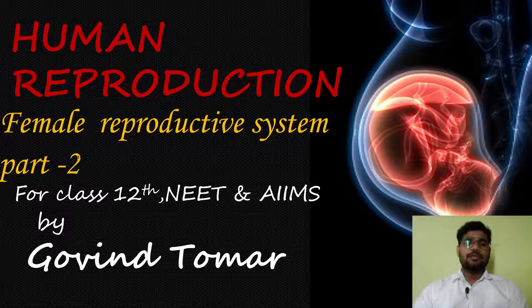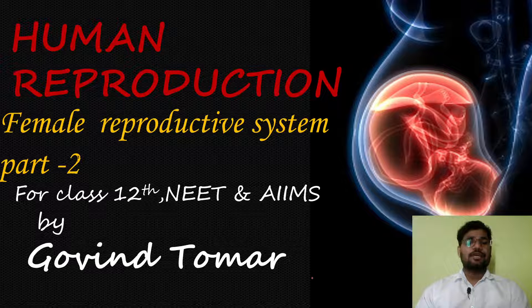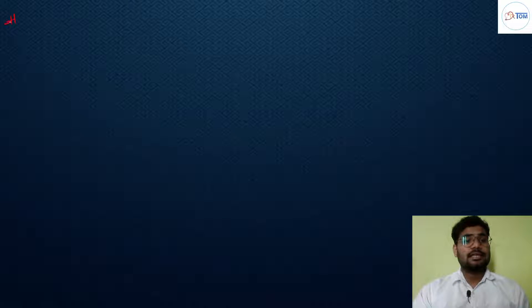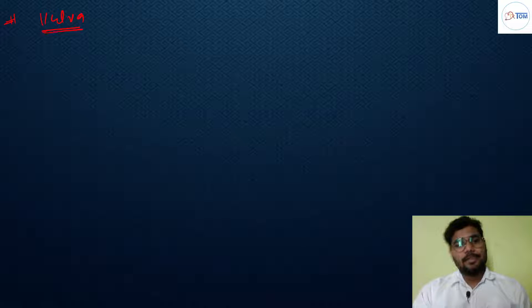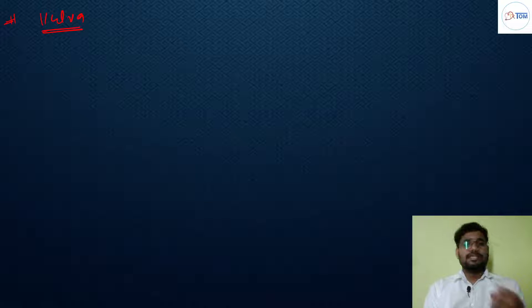In this video we will talk about the female reproductive system part 2. Today's lecture covers the external genital structure of the female reproductive system — the opening of the vagina or external genitalia. We will now discuss the vulva. The vulva has a vestibule, which is a lip-like structure present in a depression.